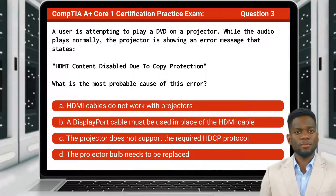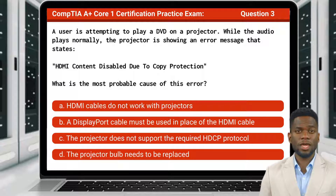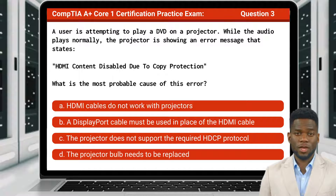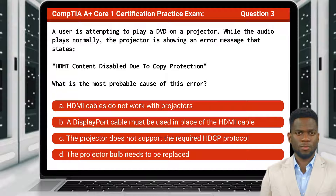Question 3. A user is attempting to play a DVD on a projector. While the audio plays normally, the projector is showing an error message that states: 'HDMI content disabled due to copy protection.' What is the most probable cause of this error?